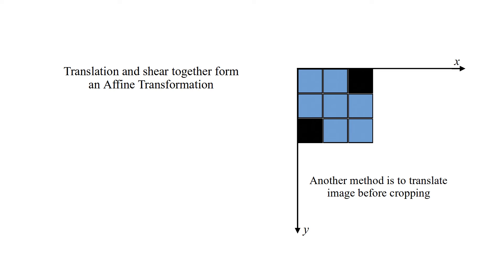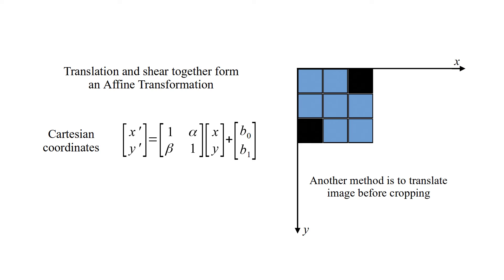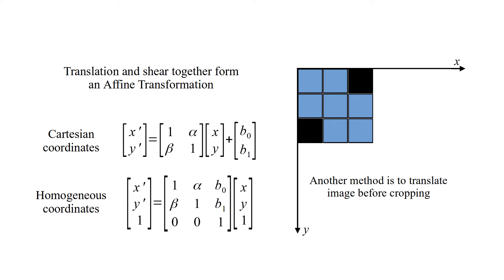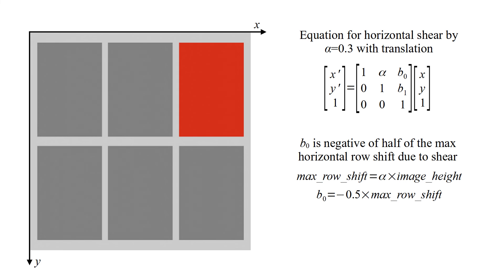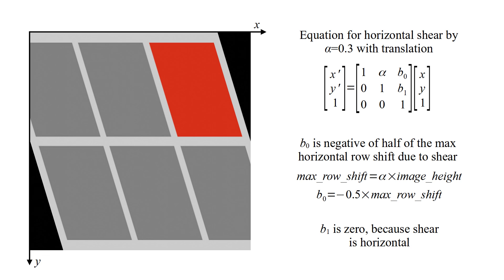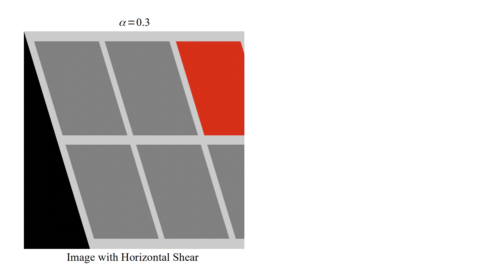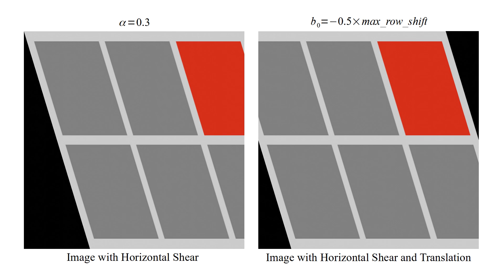Translation and shear together form an affine transformation. This is the equation in Cartesian coordinates, and this one is for homogeneous coordinates. This is the equation for horizontal shear with alpha equal to 0.3 and translation. The maximum row shift is equal to alpha times image height, and B0 is equal to minus 0.5 times the maximum row shift. B1 is 0 because the shear is horizontal. This shows the transformed image — the image with horizontal shear, and the image with horizontal shear and translation.